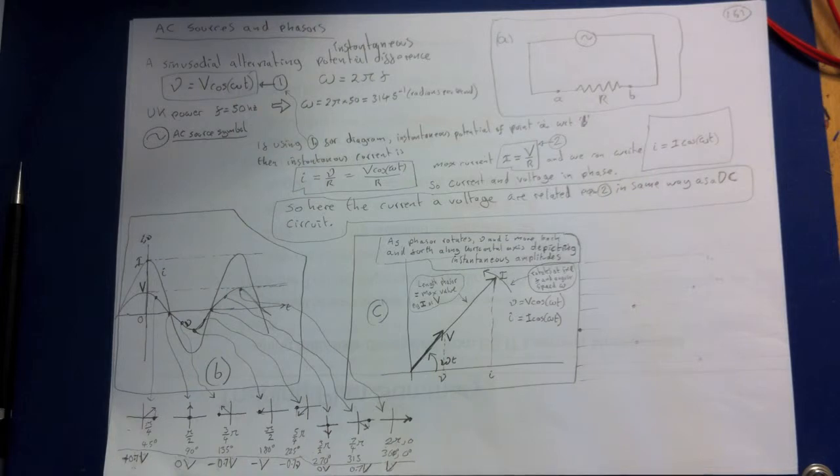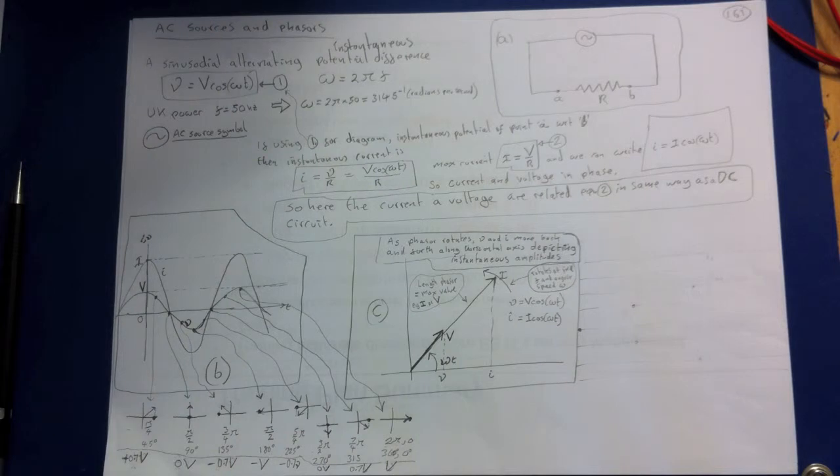The corresponding phasor diagram is given in C. Because little i and little v, the instantaneous values of the current and the voltage, are in phase and have the same frequency, the current and voltage phasors rotate together.